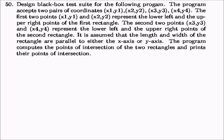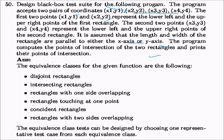Design a black box test suite for a program accepting two rectangles defined by coordinates (x1,y1), (x2,y2) for the first and (x3,y3), (x4,y4) for the second, with sides parallel to the axes, that computes their intersection. Equivalence classes: disjoint rectangles, intersecting rectangles, rectangles with one side overlapping, rectangles touching at one point, coincident rectangles, and rectangles with two sides overlapping.